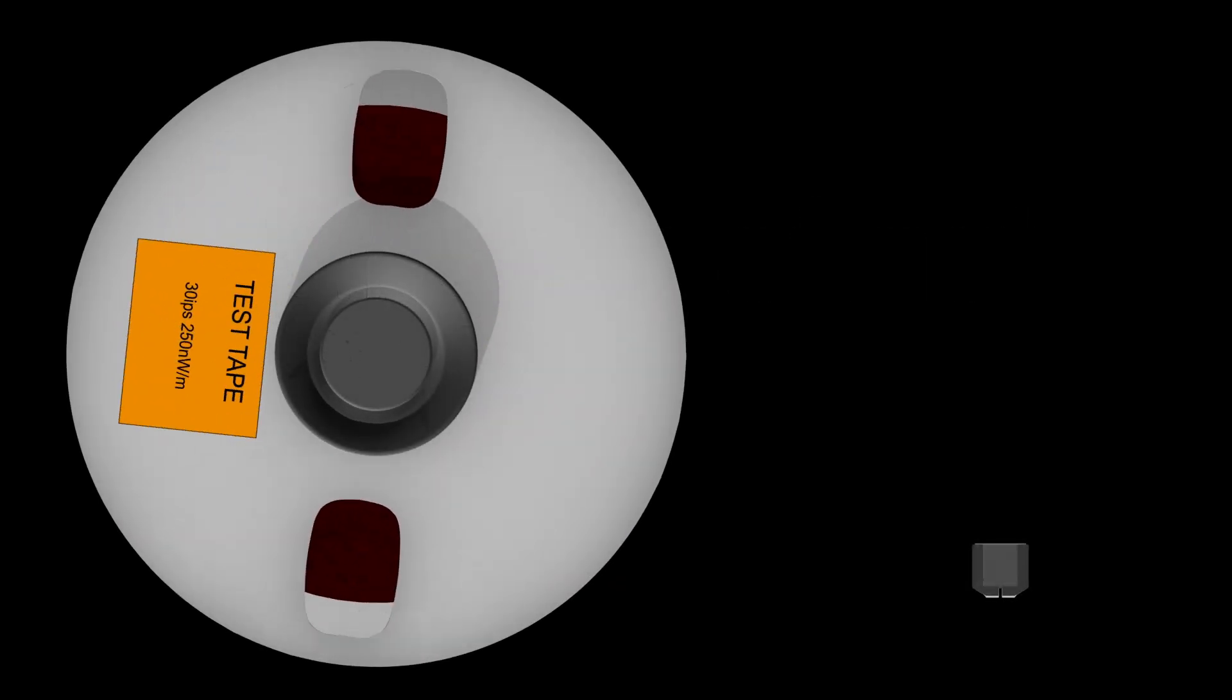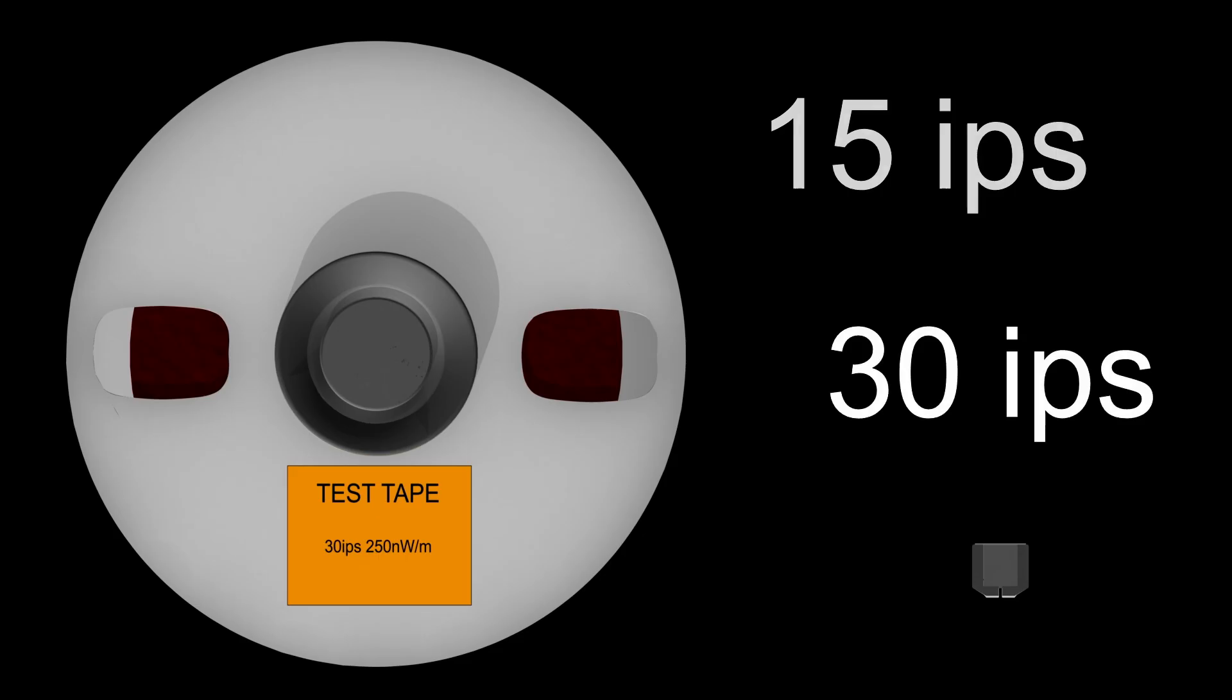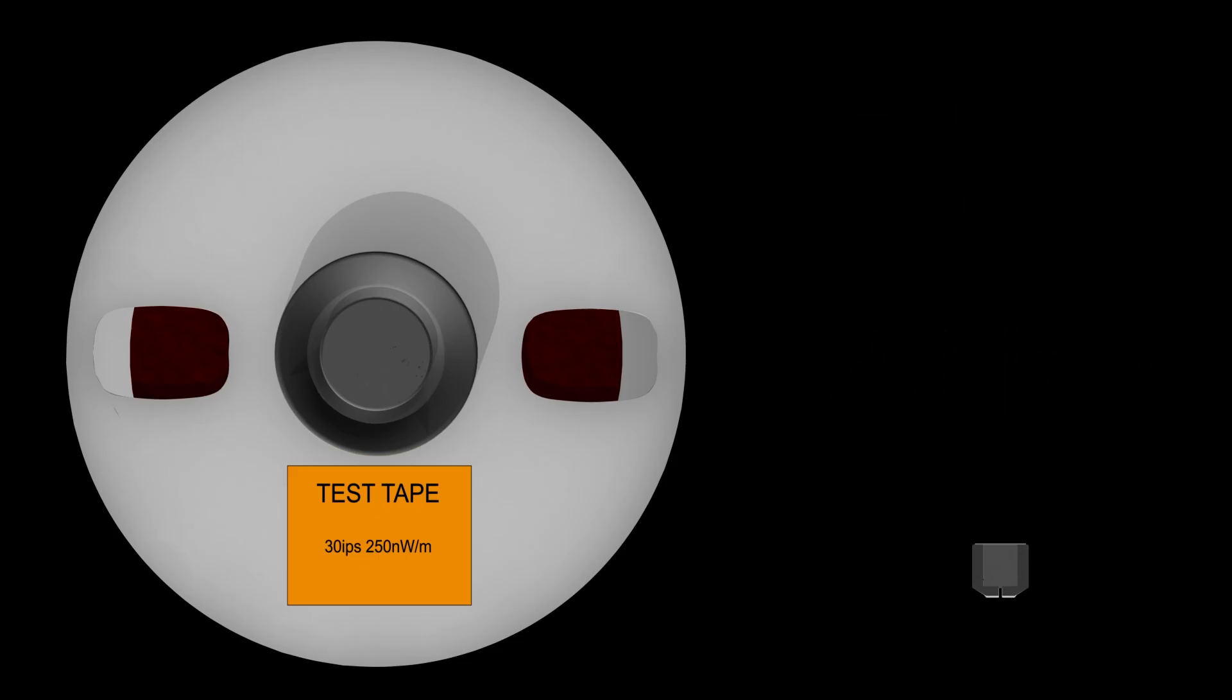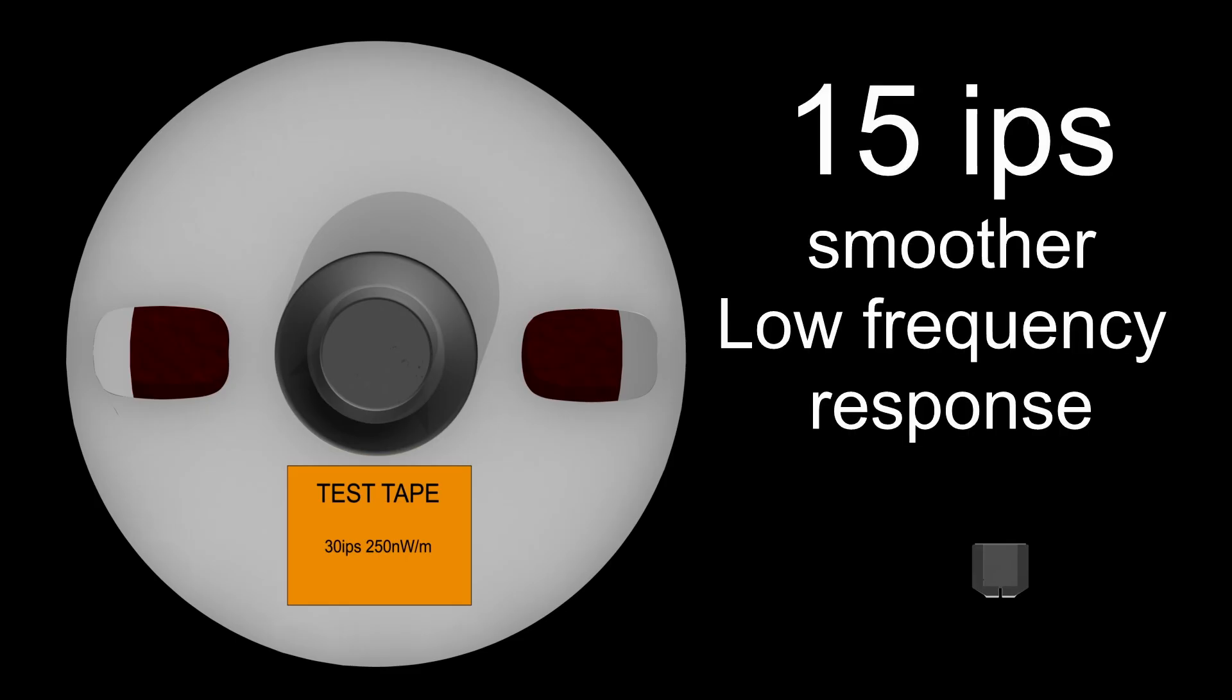Test tapes are available for all speeds and formats. Standard professional speeds are 15 and 30 inches per second. I generally use 30 inches per second to record because the tape moving faster has lower noise and more headroom. But many people prefer 15 inches per second because it tends to have a smoother low frequency response. MRL does sell test tapes that have both 15 and 30 inch per second alignment tones in a single reel.